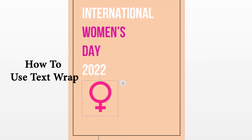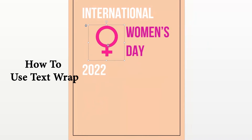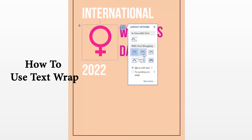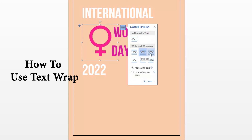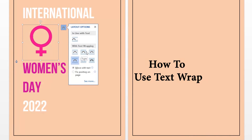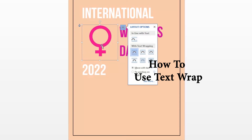Next, let's look at how to use Text Wrap. Select the image — in the right corner of the image we have an option called Layout Options. In there we can see the Text Wrap option. Select it and you can place the image inside the text or make the text bend around the image at different angles. Play with the text wrap options and choose the one which suits your design.